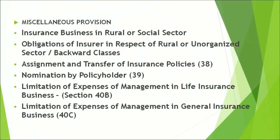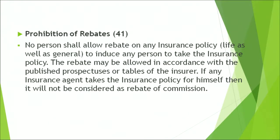There are miscellaneous provisions — the insurance business in rural or social sector and obligations of insurer in respect of rural, unorganized, or backward classes are laid down here. Assignment and transfer of insurance policies is given in Section 38 of the Insurance Act. Nomination for the policyholder is given in Section 39. Limitation of expenses of management in life insurance business is given in Section 40B, and for general insurance in Section 40C. Expenses of management include items such as payment of commission to agents. Regarding prohibition of rebates, this is considered an illegal activity — no person shall allow any rebate on any insurance policy for both life and general insurance to induce any person to take up insurance. Agents are not allowed to induce any person through rebates.